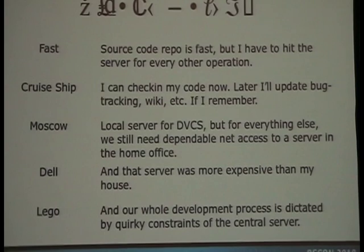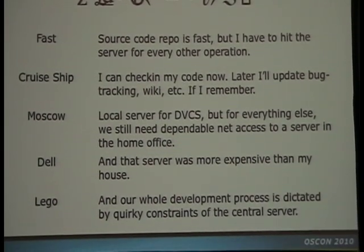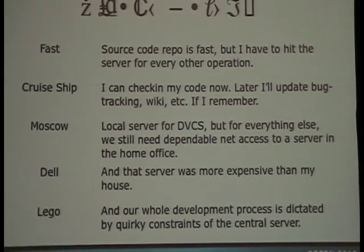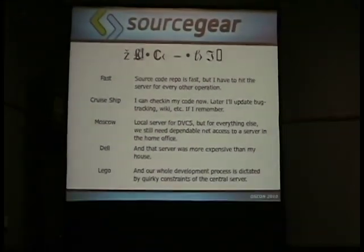When you take a DVCS and try and mix it with a whole bunch of centralized stuff, you get an oil-and-water mixture that doesn't work. Your source control operations are fast, but you still have to have a live connection every time you update a bug. In disconnected scenarios, you can check in your code, but you can't do all the other things you're supposed to do. If you have multiple cities, DVCS works great, but you still need this live connection for everything else. That central server costs more than your house if you're on a big team, and it's so quirky that it dictates everything about your development process.